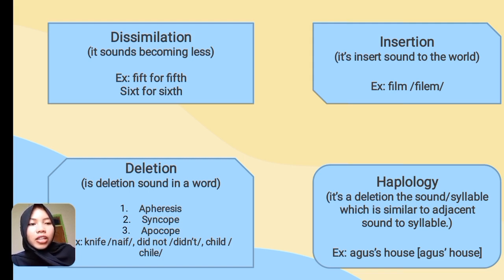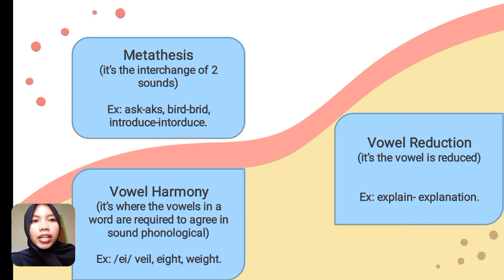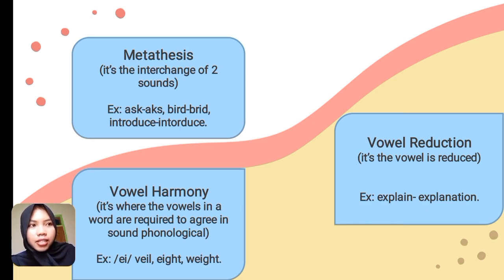For example, 'Augustus house' — we delete the 'S' at the back because there are two S sounds, so we pronounce it simply as 'Augustus house'. The next type is metathesis. Metathesis is the interchange of two sounds — for example, 'ask' becoming 'ax'. It is a change of placement and is usually a slip of tongue, but can be a variety of the original word.